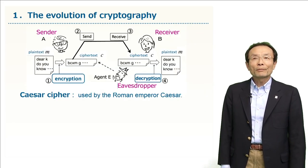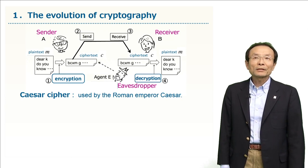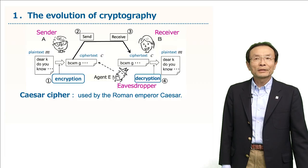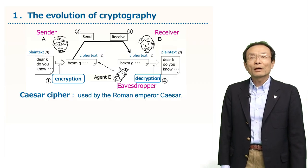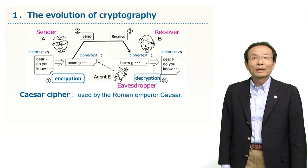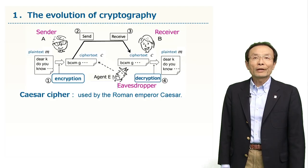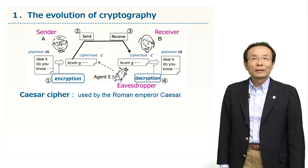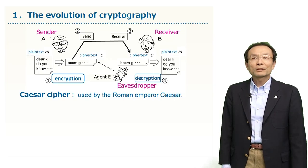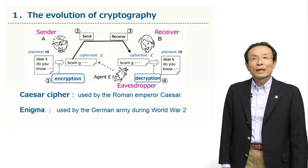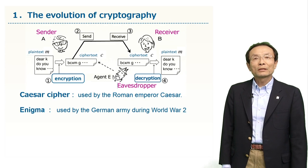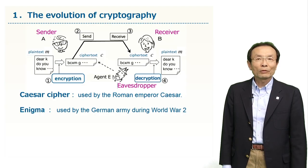Let me first talk about the evolution of cryptography. In the last session, we used an encryption method called the Caesar Cipher, which is said to have been used by the Roman Emperor Caesar. This was a very simple encryption method, and in fact, we were able to break it easily — the cryptanalysis was not so difficult. Since then, cryptography has made much progress and has become much stronger. For example, Enigma, the method which the German army used during World War II, was considered to be very powerful cryptography.